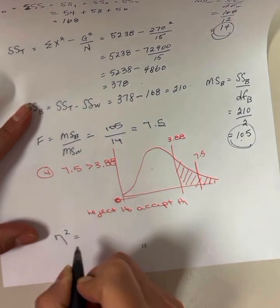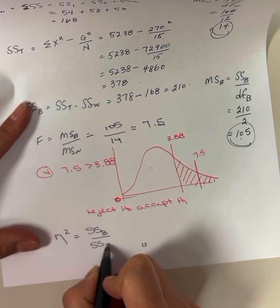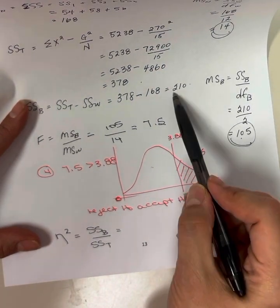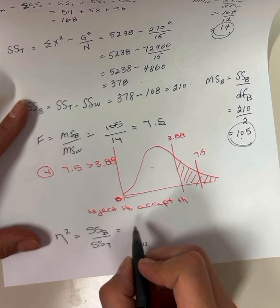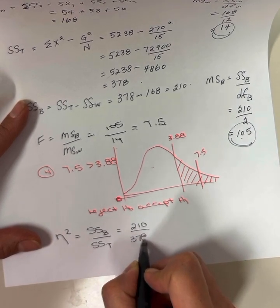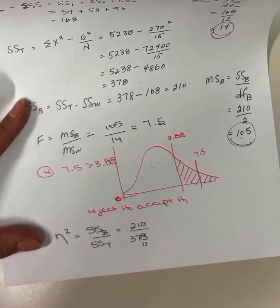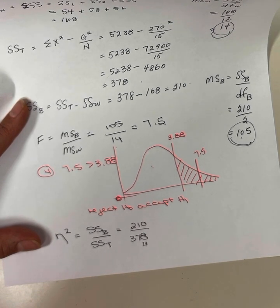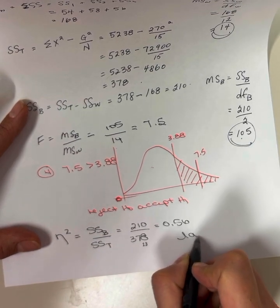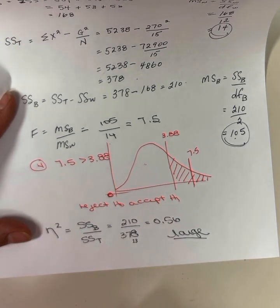B, compute eta squared. And is it small, medium, or large? The formula for eta squared is sum of squares between divided by sum of squares total. We already have those values. Sum of squares between was 210, and sum of squares total was 378. So I have 210 divided by 378, which is 0.56. This is a large effect size. Okay? And there it is. That's the last question of this exam.